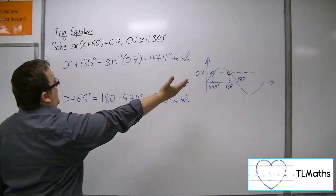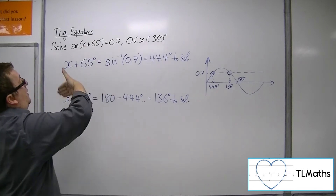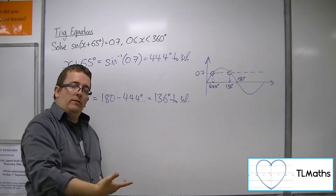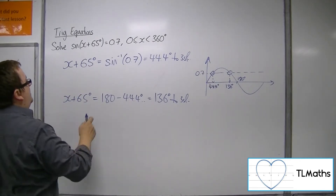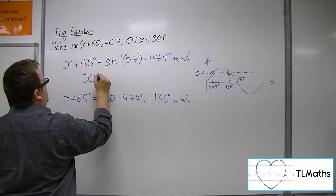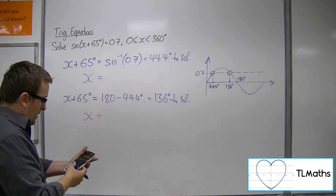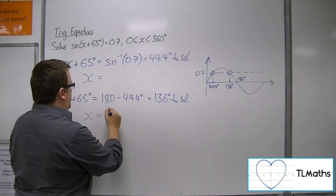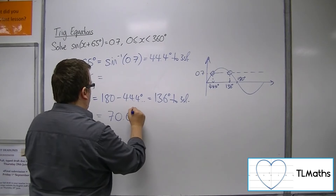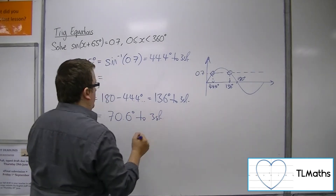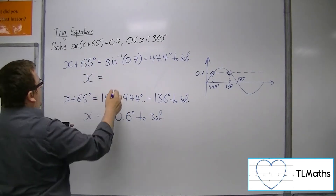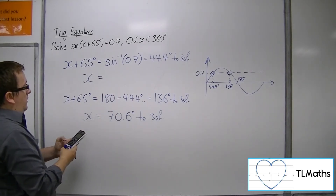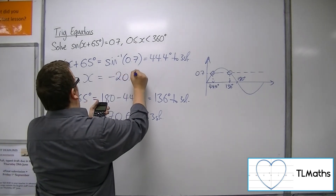What I've done is solved this equation as if it is sine x equals 0.7, and then I apply the transformation. So I then subtract 65 from both of these answers. For this one I get 70.6 degrees, and for this one I get minus 20.6.